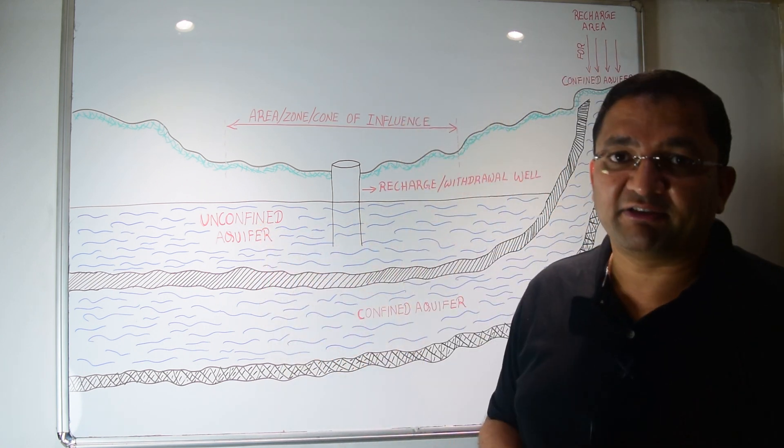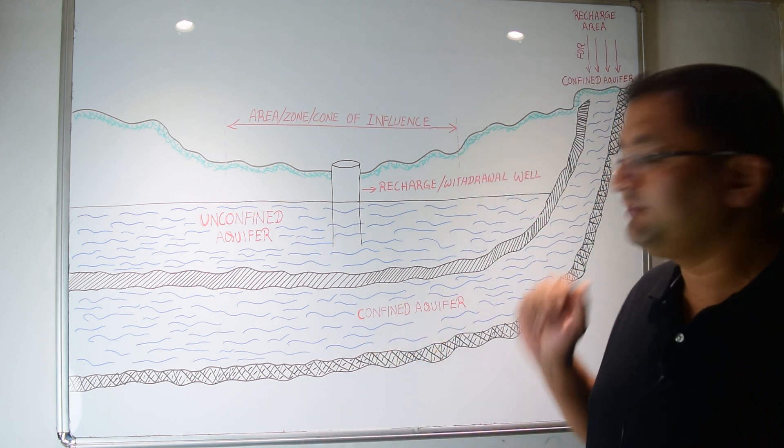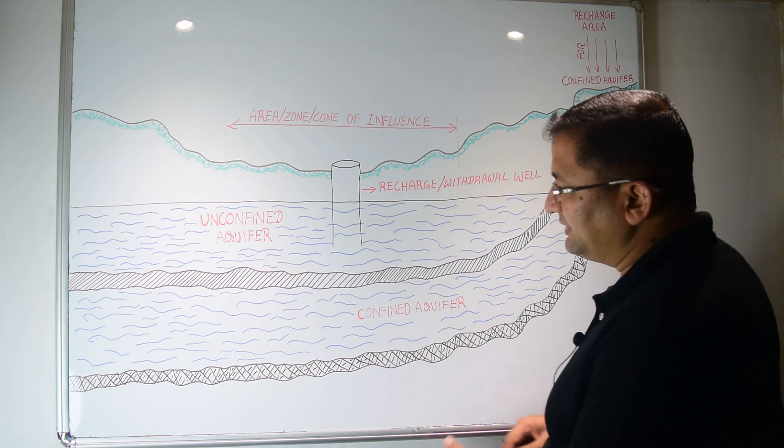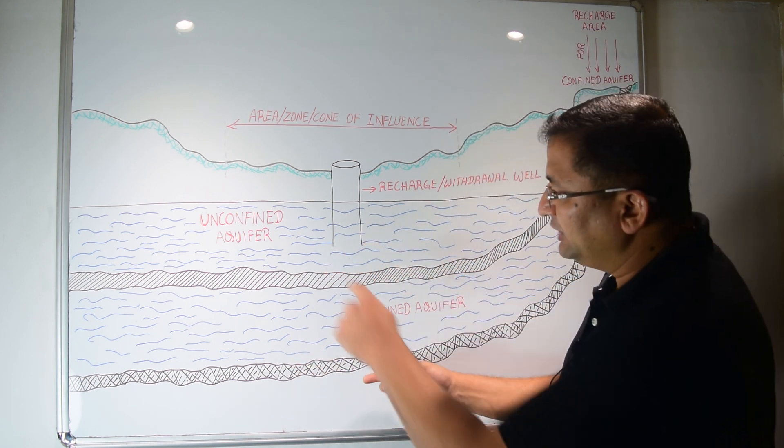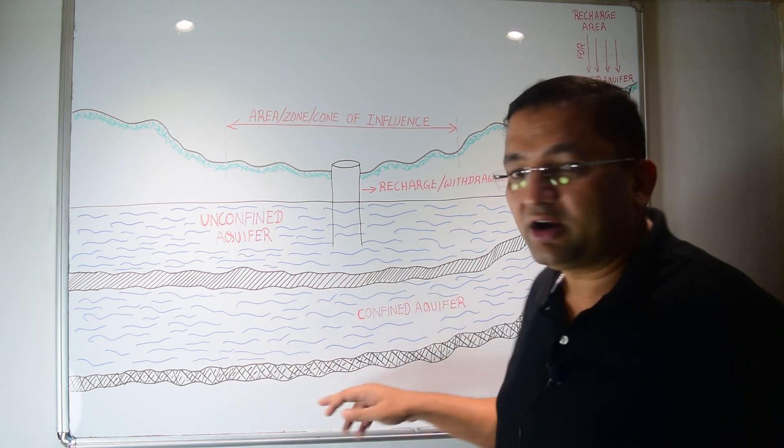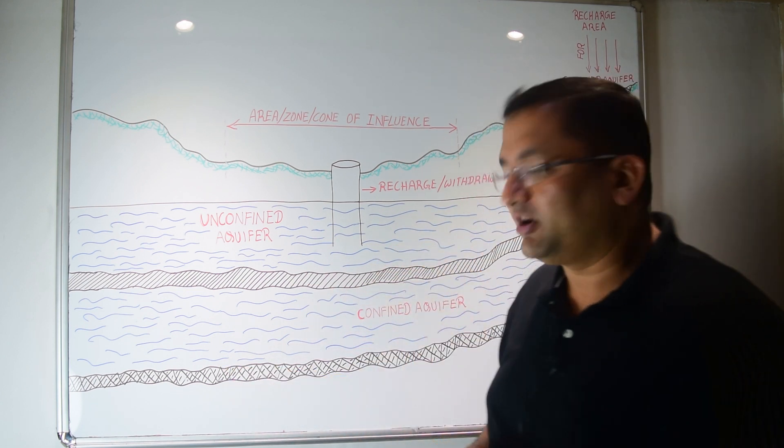One is called unconfined aquifer, other is called confined aquifer. As the name suggests, the confined aquifer, the water is stored between two impermeable strata which can be either clay or rock or any kind of impermeable formation.